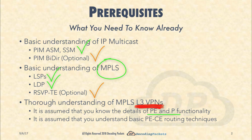It is also assumed that you understand the basic PE-to-CE routing techniques — for example, how OSPF is used between PE and CE, how BGP is used, and how any of the other protocols are used. We may not go in depth with a lot of that, but there will definitely be a PE-to-CE protocol already running, on top of which we build the multicast VPN.